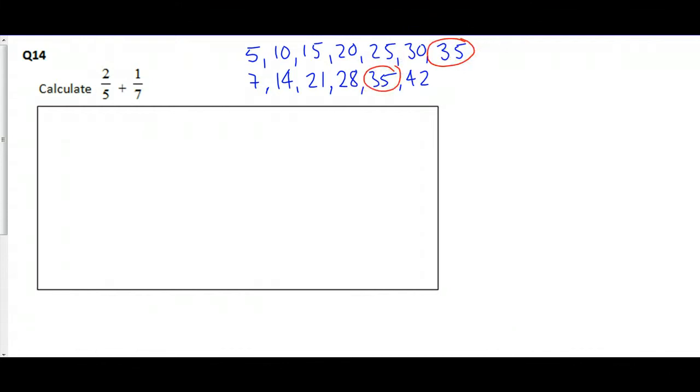I can see that. So instead of 5 and 7, let's make them into the same size chunk. Let's turn them into 35ths. How many fives do I need? 5, 10, 15, 20, 25, 30—1, 2, 3, 4, 5, 6, 7. So this has got to get seven times bigger, so that's 14.